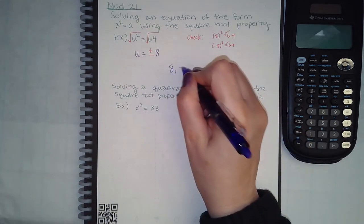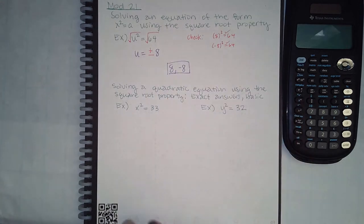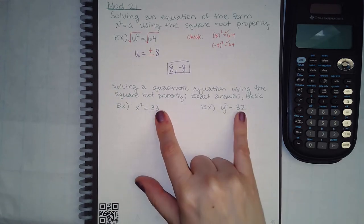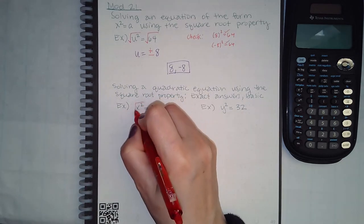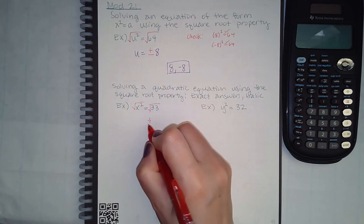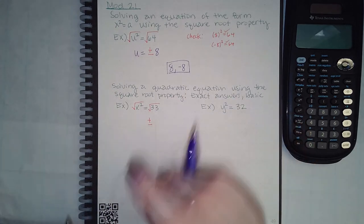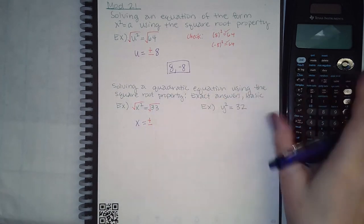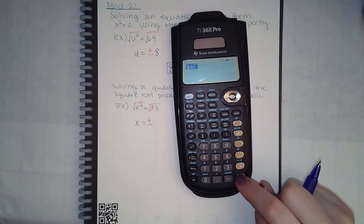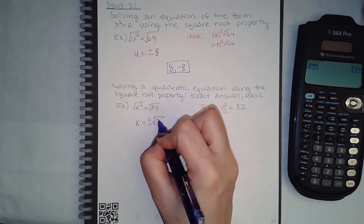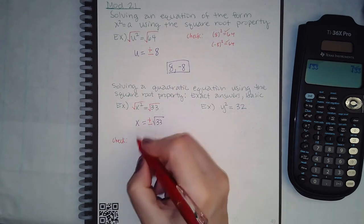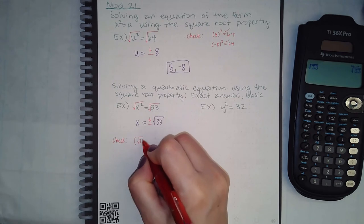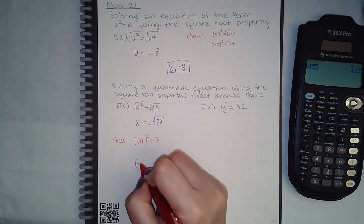Both answers are correct and are part of my solution. The next topic is very similar — the only difference is these are not perfect squares, but the same application applies. To get rid of a square, take the square root on both sides. Because I introduced the square root, I get plus or minus, so x equals plus or minus the square root of 33. Type it in the calculator — it does not simplify, so it stays as the square root of 33. Be sure to check both answers.